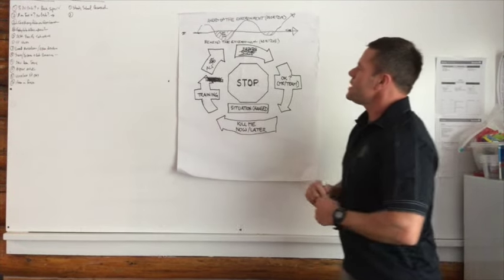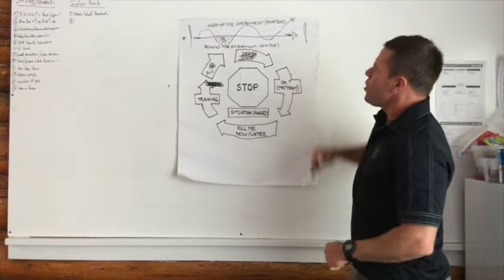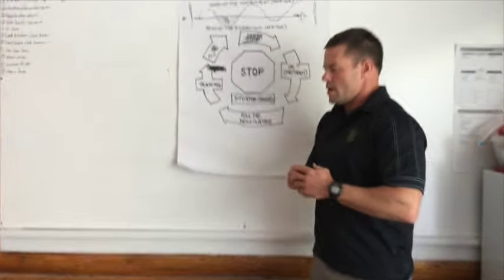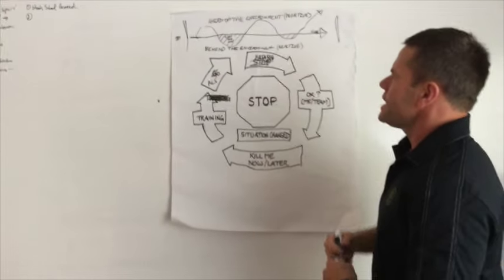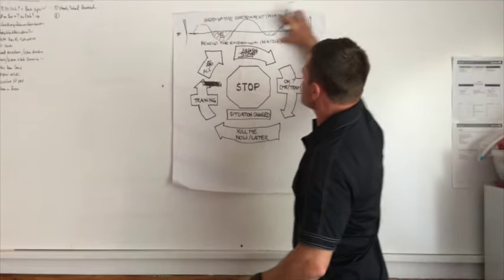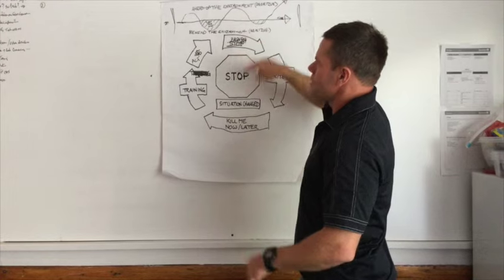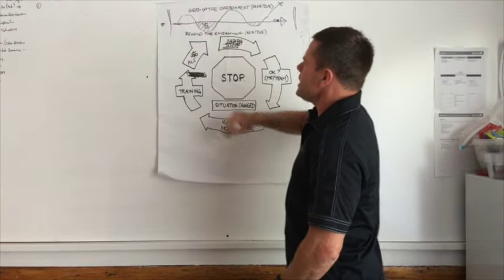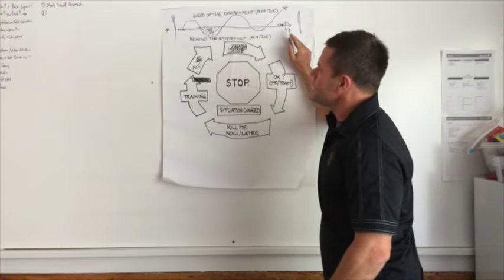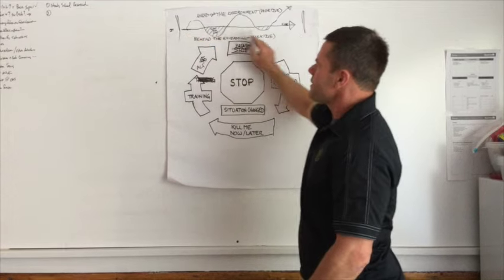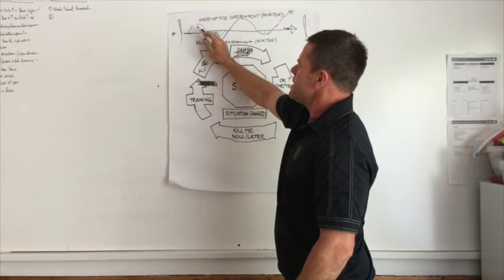One group came up with this idea of how things happen out there over the course of time for mountain and tactical athletes. We're going to look at this right here—this is the environment that you're working in, a mountain or tactical environment. If you're above the line, things are going good and you're aware and in front of what's happening. If you're below the line, things are going bad.